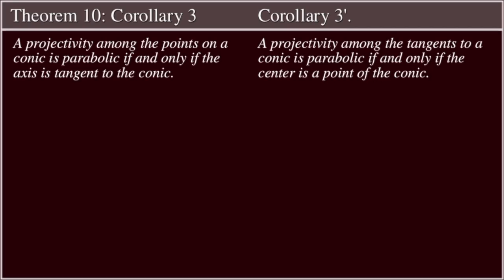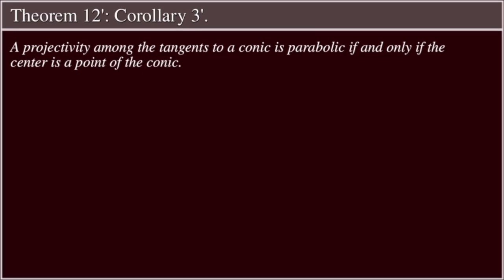Corollary 3: A projectivity among the points on a conic is parabolic if and only if the axis is tangent to the conic. Corollary 3': A projectivity among the tangents to a conic is parabolic if and only if the center is a point of the conic.